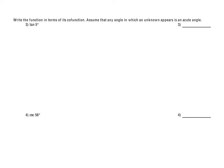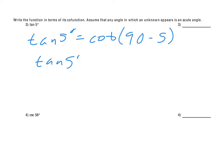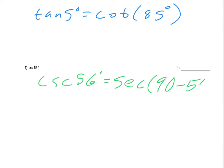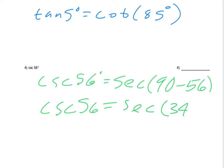For number 3, we need to write the tangent of 5 degrees in terms of its co-function. So the tangent of 5 degrees equals the cotangent of 90 minus 5, which gives cotangent of 85 degrees. We're doing the same thing for the cosecant of 56 degrees. The co-function for cosecant is secant, so it'll be secant of 90 minus 56, which gives us secant of 34 degrees. That's all there is — just writing the function in terms of its co-function.